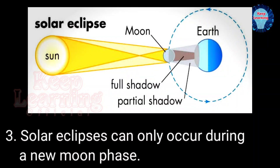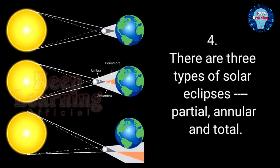Solar eclipses can only occur during a new moon phase. There are three types of solar eclipses: partial, annular and total.